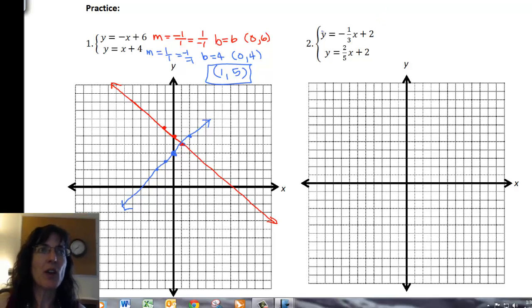Number two, y equals negative one-third x plus two, and y equals two-fifths x plus two.